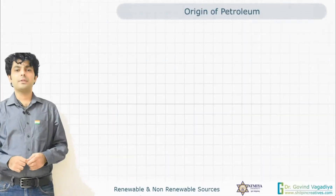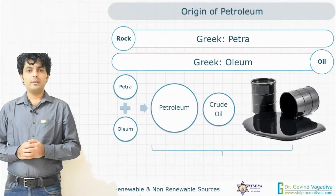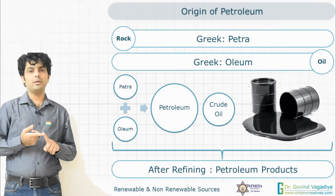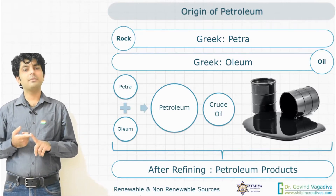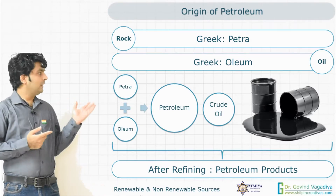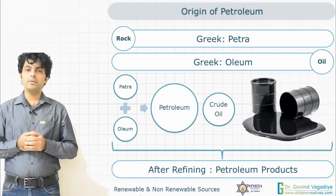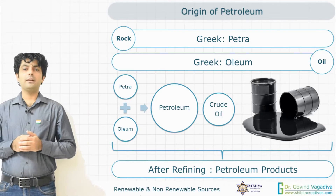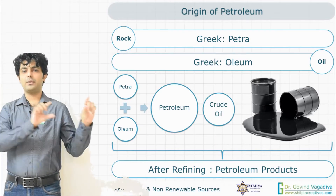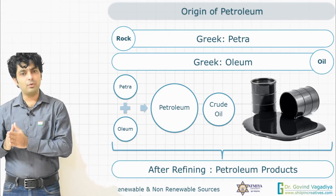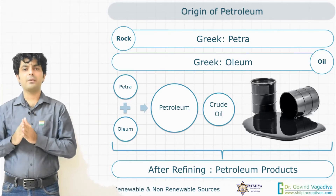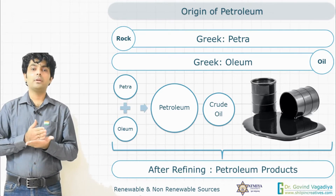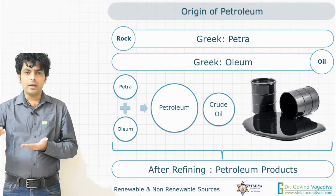Petroleum is derived from two words: 'petra,' a Greek word meaning rock, and 'oleum,' meaning oil. When combined, they create the word petroleum — petra plus oleum.